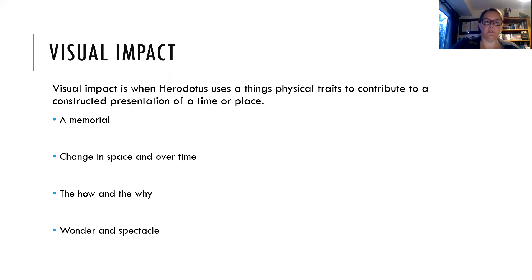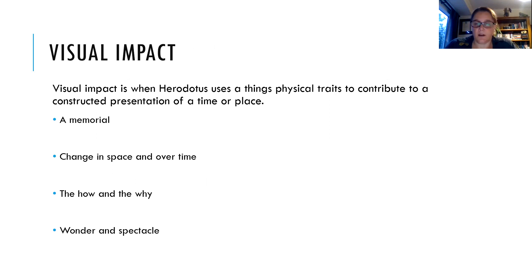By visual impact, I mean when Herodotus uses a thing's physical traits to contribute to a constructive presentation of a time, place, or thing. The physical objects and phenomena Herodotus describes do have an evidentiary value — by their presence they show the existence of kings, where people lived, and how land looked. The memorializing function requires more than just the presence of physical things to fulfill its purpose. The visual impact of descriptions of the monuments, culture, and landscape leaves not only proof of something's existence, but also a presentation of people and places at certain points in time. The description of the road constructed to enable the building of Cheops's pyramid not only signifies the power of the king but also something of the nature of his reign.